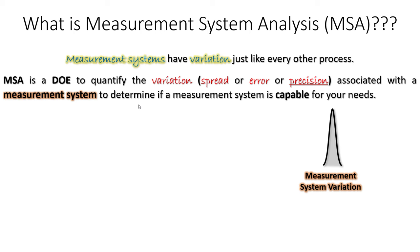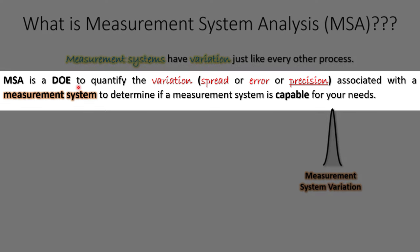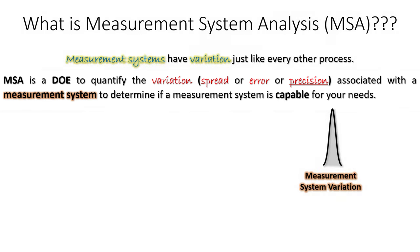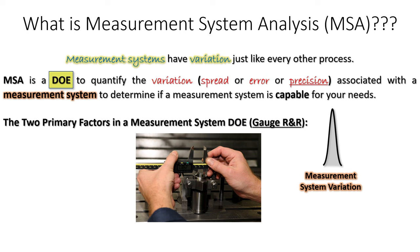Here's a definition I love for measurement system analysis or gauge R&R: I love to use the analogy of a DOE. A gauge R&R is essentially a DOE that we do to quantify the variation or precision associated with your measurement system, to determine if our measurement system is capable for your needs. In a DOE, we identify important factors and measure the impact they have on a response. In the world of gauge R&R, there are two primary factors that contribute variation to a measurement system.